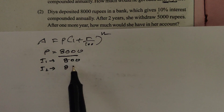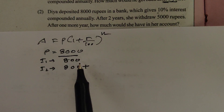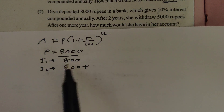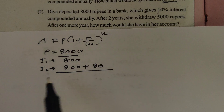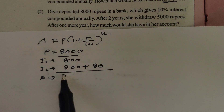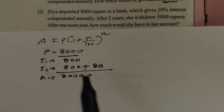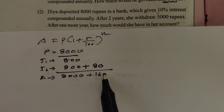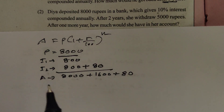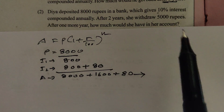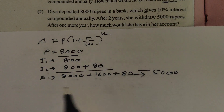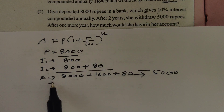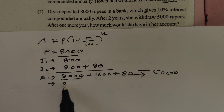The interest in the first year on 8,000 at 10% is 800. The interest in the second year is also 800. The total amount after 2 years is 8,000 plus 800 plus 800, giving 9,680. Then we subtract the withdrawal of 5,000, leaving a remaining amount.